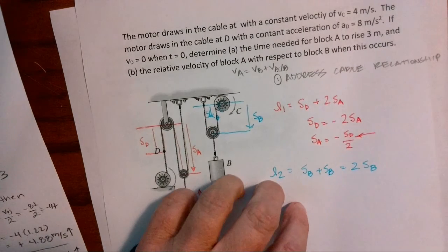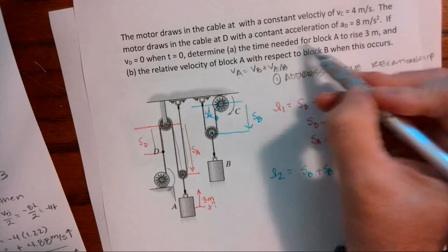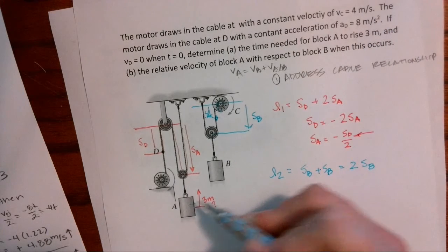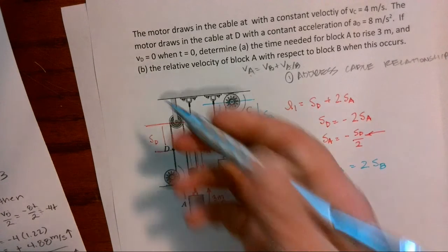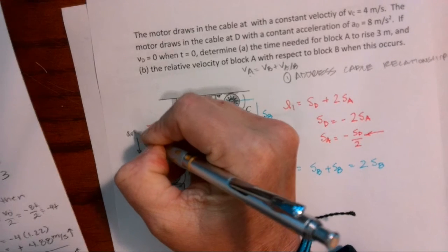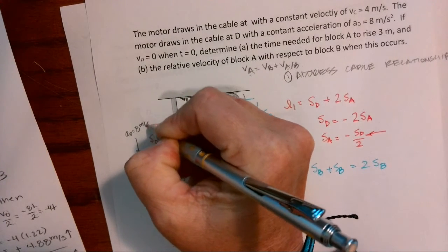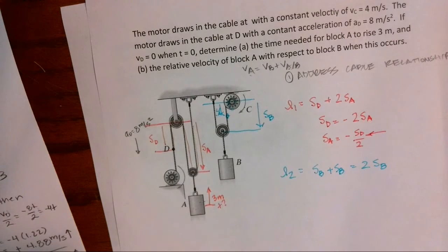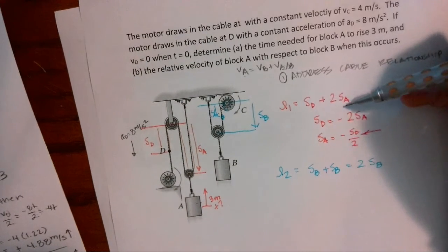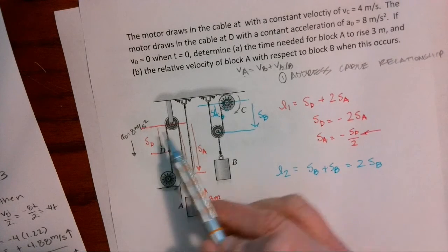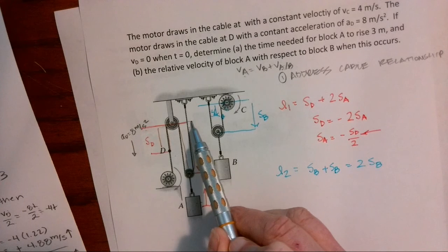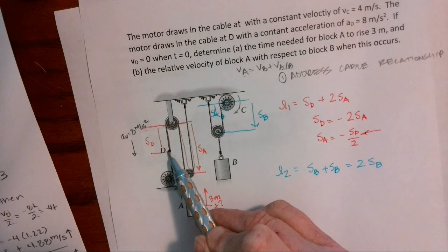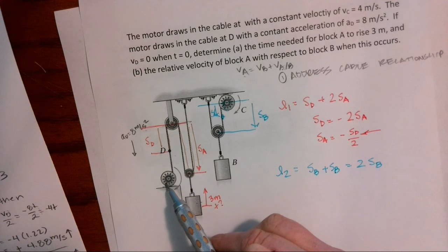So the first thing we need to do is deal with over here at A. We want this to rise three meters and I know that I have an acceleration equal to eight meters per second squared. And I set up my length of my cables. So I have two separate datum, one for each system.